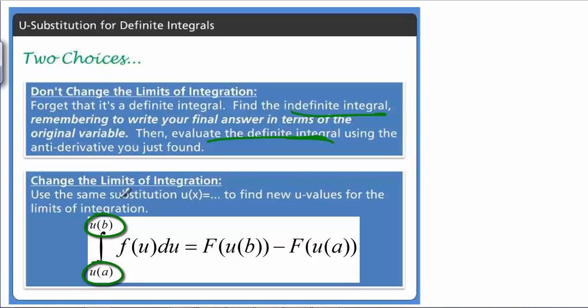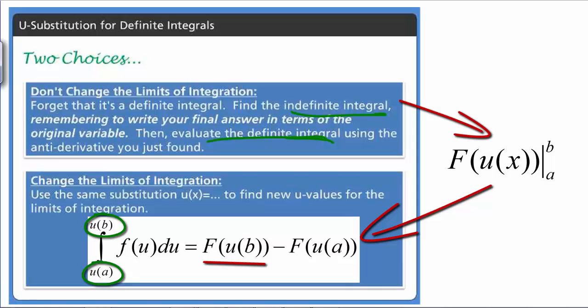The last thing to point out is that even though we're calling these two different methods, they're actually the same. When you don't change the limits of integration, you find F of U of X and you evaluate it from A to B. So you get capital F of U of B minus capital F of U of A. Just like when you switch the limits of integration to U values at the beginning and you end up plugging in U of A into capital F and U of B into capital F. Both ways you end up with the same formula.